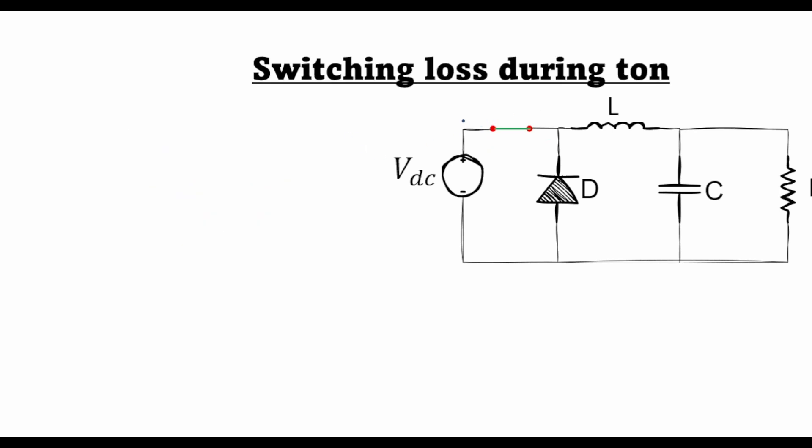Now when the switch is turned on, then whole of the output current I0 flows through this transistor but assuming ideal condition the voltage across the transistor when the switch is on, the voltage is equal to zero.